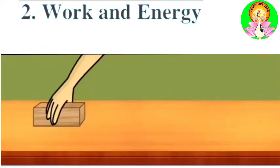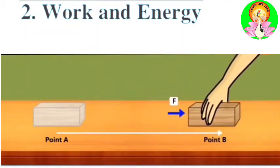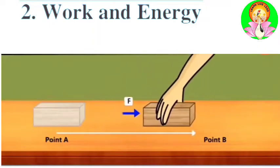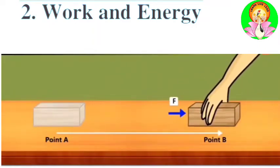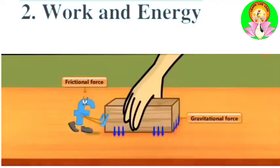When the block of wood is displaced from point A to point B along the surface of the table by applying force F, we need to find whether all the energy spent is used to produce acceleration in the block. We can say that when force is applied on a body, the whole energy spent is used to produce acceleration in the block. The forces overcome using that energy are gravitational force and frictional force.